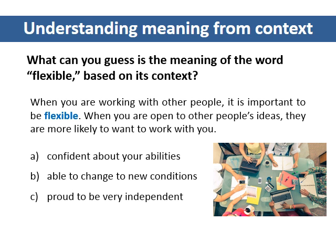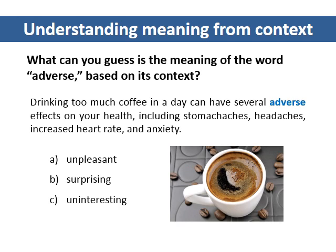What can you guess is the meaning of the word flexible based on its context? The correct answer is B. The second sentence gives us an important clue about the meaning of the word flexible — it names a positive outcome of being open to other people's ideas. To be flexible means to be able to change with new conditions. What can you guess is the meaning of the word adverse based on its context? The correct answer is A. Stomach aches, headaches, increased heart rate, and anxiety are all clues that tell us adverse means something similar to unpleasant.